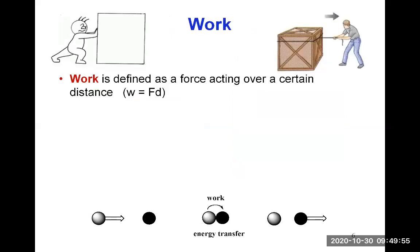So what is work? We said energy is the capacity to do work. Work is defined as a force acting over a certain distance. Work can be symbolized as W, and it's F — a force — times D, a distance. So it's a force acting over a distance. You can see illustrations of people pushing or pulling; they are trying to do work, and for this they need energy.